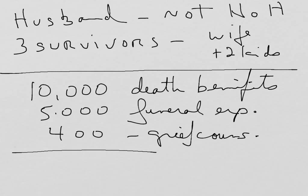It says in addition, with respect to the death of the head of the household — well, this does not apply because this is not the head of the household. So items A and B and the subsection underneath do not apply, as they only relate to the death of the head of the household. So our total death benefit in this case is $10,400.